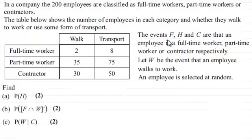And the events F, H and C are that an employee is a full-time worker, part-time worker or contractor respectively. Let W be the event that an employee walks to work.